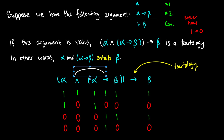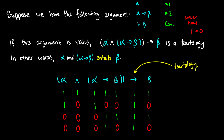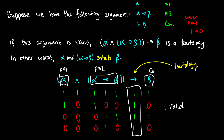Now we do the final arrow, taking information from the AND column and from beta. It's only false if we have one arrow zero. Row one: one arrow one, true. Row two: zero arrow zero, true. Row three: zero arrow one, true. Row four: zero arrow zero, true. The entire well-formed formula in this column is a tautology — all ones — therefore this is a valid argument. No matter what the assignment for alpha and alpha arrow beta is, we get beta out of it.